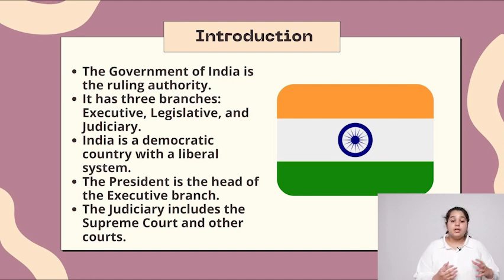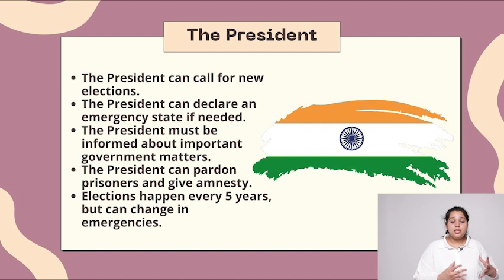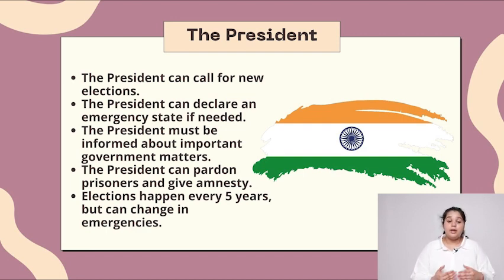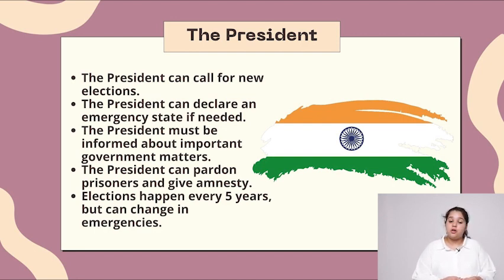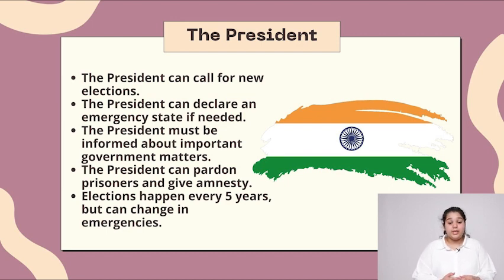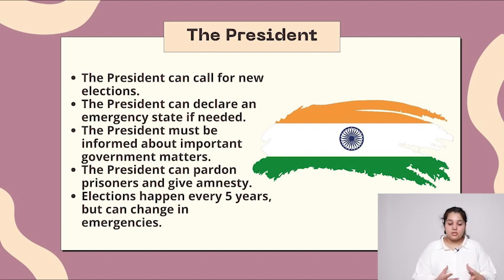The president can call for new elections and can declare an emergency state if needed. The president must be informed about important government matters. He or she can pardon prisoners and give amnesty. Elections happen every five years, but in an emergency this can change.